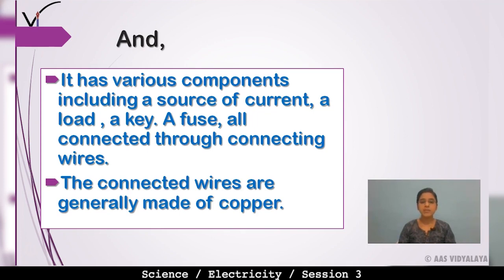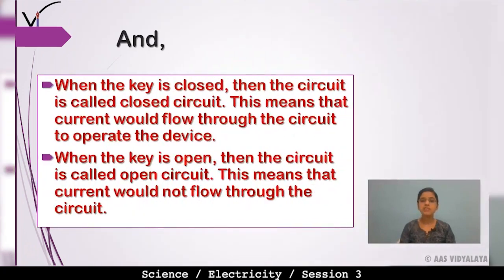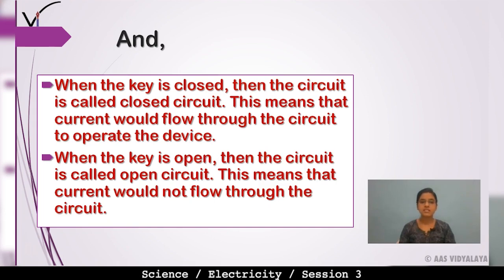When the key is closed, then the circuit is called a closed circuit. This means that current would flow through the circuit to operate the device. When the circuit is closed, current flows through it; if the circuit is not closed, current will not flow.